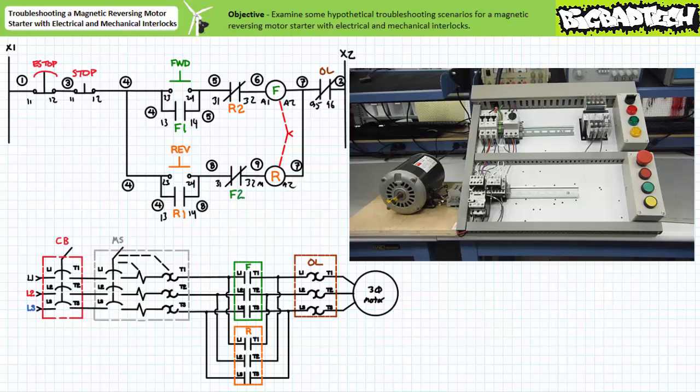Recall our magnetic reversing motor starter with electrical and mechanical interlocks exhibits the following behavior. When an operator presses and releases the forward push button, the left contactor physically closes and the motor rotates in one direction. While in forward mode, the closure of the reverse push button serves no purpose since the electrical interlock provided by the contact F2 does not allow the reversing contactor coil to be energized.